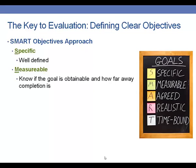Objectives should also be measurable. We should know if the goal is obtainable, how far away from completion we are, and the metrics we are going to use so that we can measure whether or not our goal was achieved.